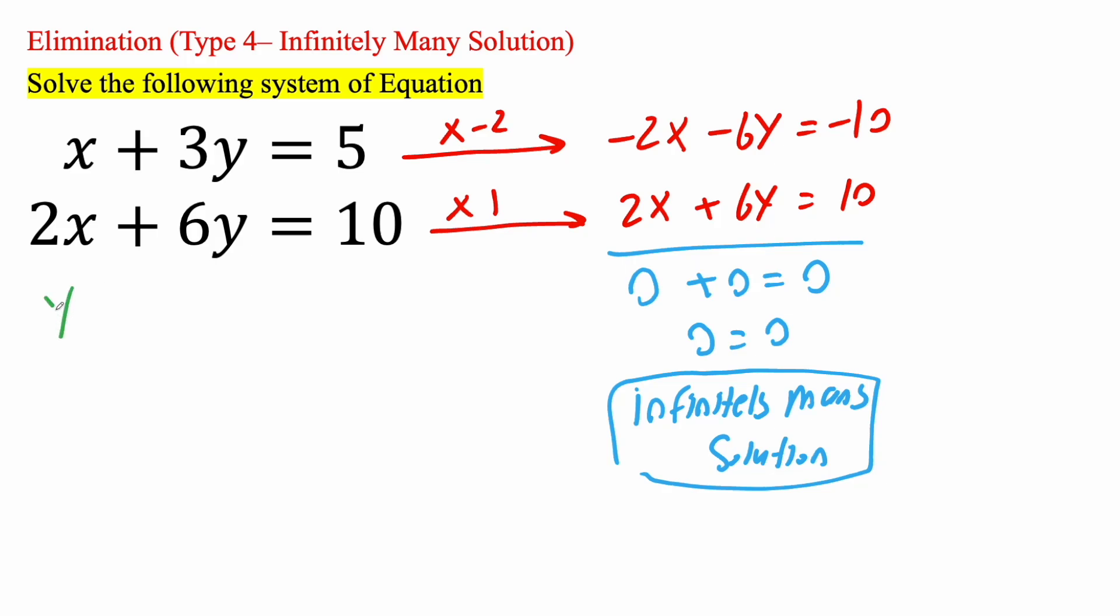So let's just say y is equal to 1. If I say y is equal to 1, I plug it in here, 3 times 1 is 3, and I want to get rid of it, 5 minus 3 is 2. So if y is equal to 1, then x is equal to 2. And let's just double check. 2 plus 3 times 1 is 3, 2 plus 3 is 5. That works.